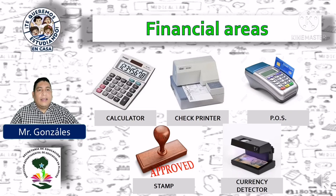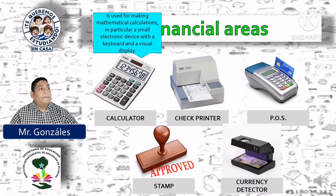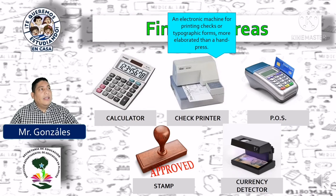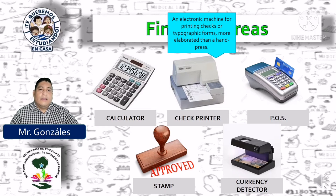Financial areas. Áreas que están relacionadas con las finanzas. Calculator is used for making mathematical calculations — in particular, a small electronic device with a keyboard and a visual display. Calculadora es utilizada para hacer cálculos matemáticos en un dispositivo electrónico pequeño con un teclado y una pantalla visual. Check printer: an electronic machine for printing checks or typographic forms more elaborated than a hand press. Una máquina electrónica para imprimir cheques o formas tipográficas más elaboradas que una impresión manual.